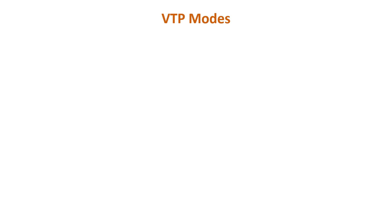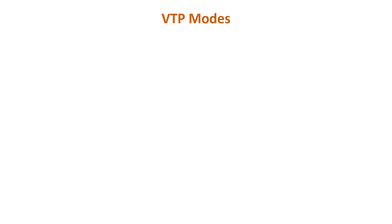VTP modes. Each Cisco switch can operate in one of three VTP modes. The first is VTP server mode, which is the default mode for Cisco switches. A switch operating in this mode can create, modify, and delete VLANs. You can also specify other VTP configuration parameters on a VTP server, such as VTP version and VTP pruning for the entire VTP domain. A VTP server switch will propagate VLAN changes. To configure a switch as a VTP server, use the 'vtp mode server' global configuration command.